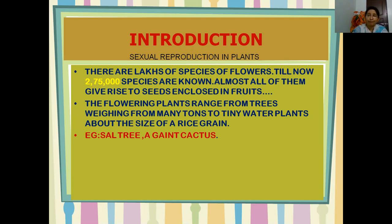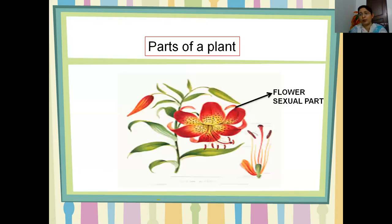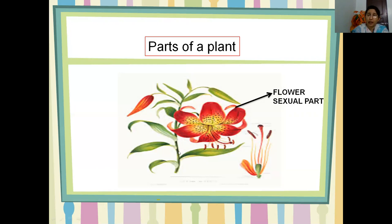We will see the importance of the flower, its parts, and their functions. The examples for tall trees I'm taking are the salt tree and the chained cactus. Before entering into the topic of the flower, I want to tell you why the flower is the sexual part and what the remaining parts of the plant are called. A plant has many structures: the stem, leaves, roots, branches, and flowers.